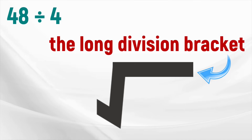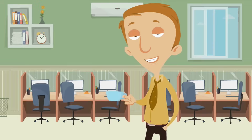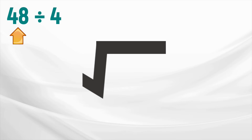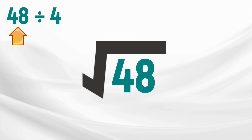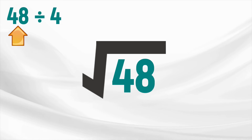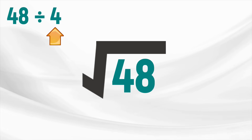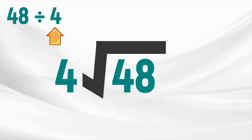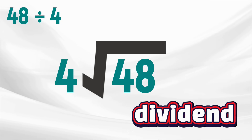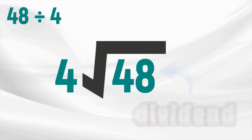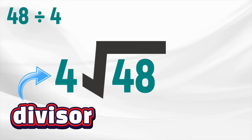The long division bracket. This is how we set up a long division problem. We put the dividend — that's the big number we're splitting up — inside the bracket. The dividend in this problem is 48. The divisor, which is four in this problem, goes right here, right in front of the bracket. The dividend goes inside the long division bracket and the divisor is placed out in front.